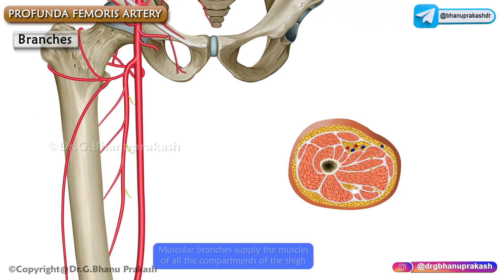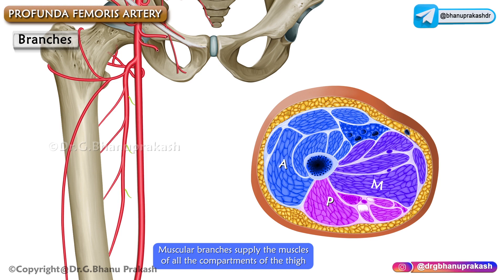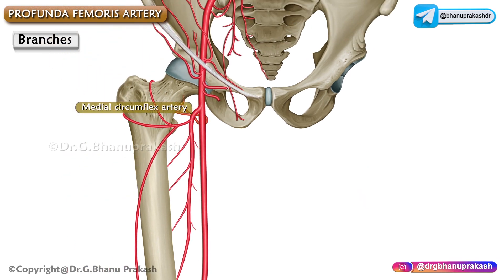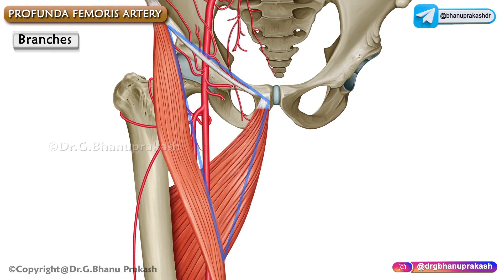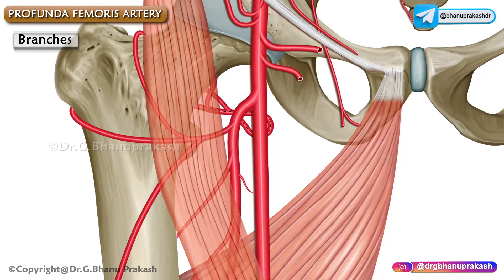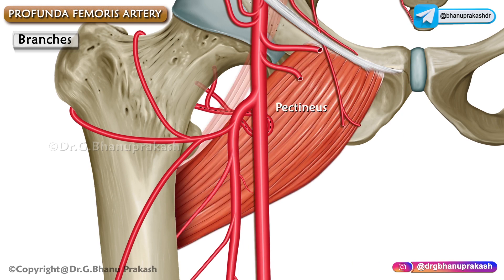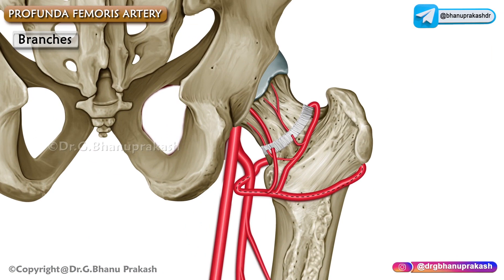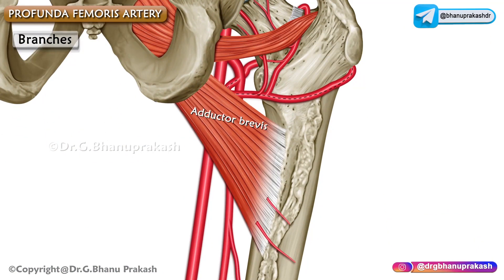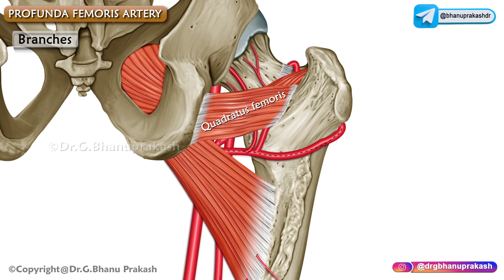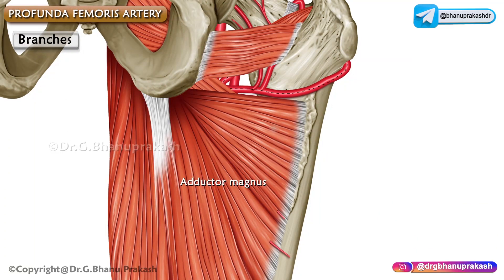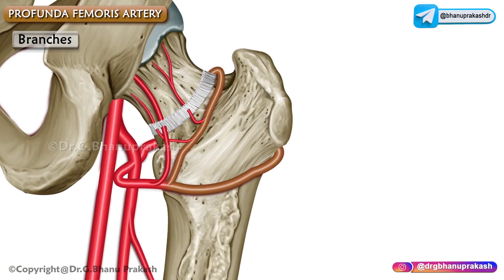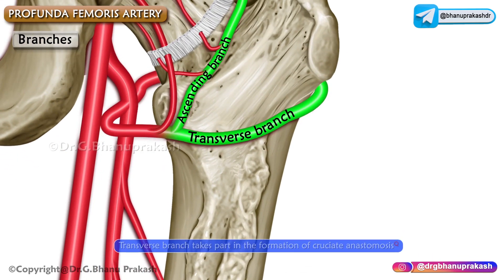The muscular branches supply the muscles of all compartments of the thigh. The medial circumflex femoral artery, a branch of the profunda femoris artery, leaves the femoral triangle by passing posteriorly between the pectineus and psoas major muscles, then passes successively between the obturator externus and adductor brevis, and between the quadratus femoris and the upper border of the adductor magnus, where it gives off transverse and ascending branches.